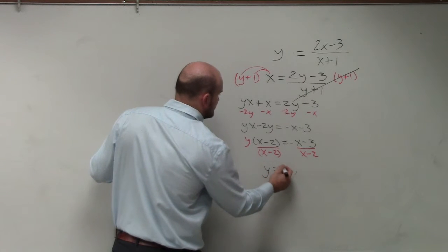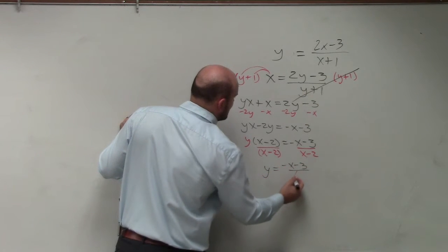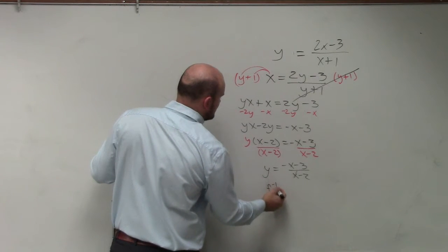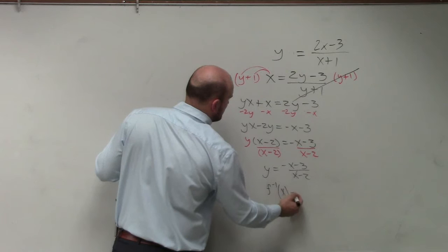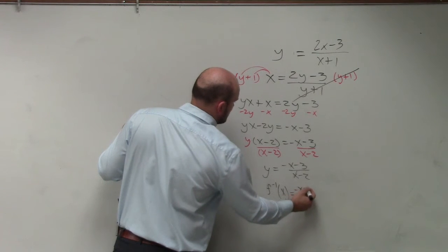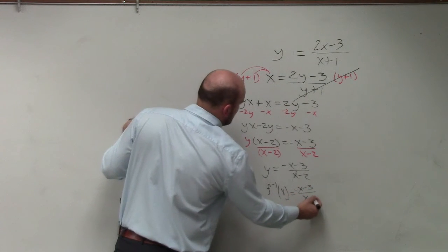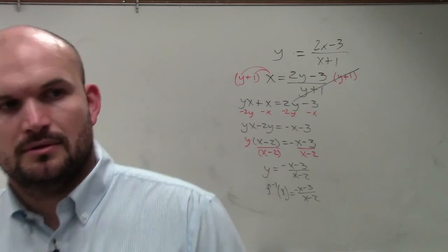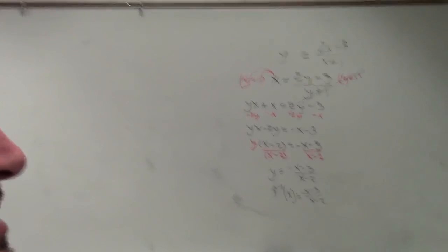So y equals negative x minus 3 divided by x minus 2. And therefore, then I re-put it back into inverse notation. And there you go. Easy.